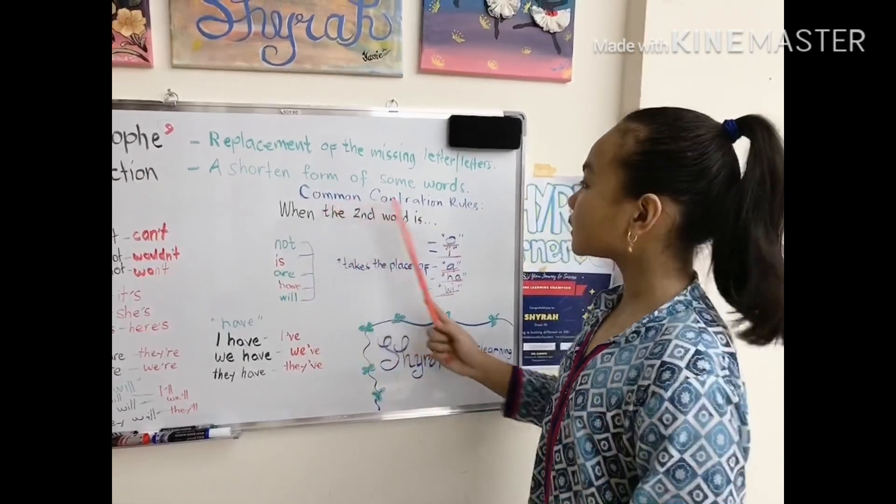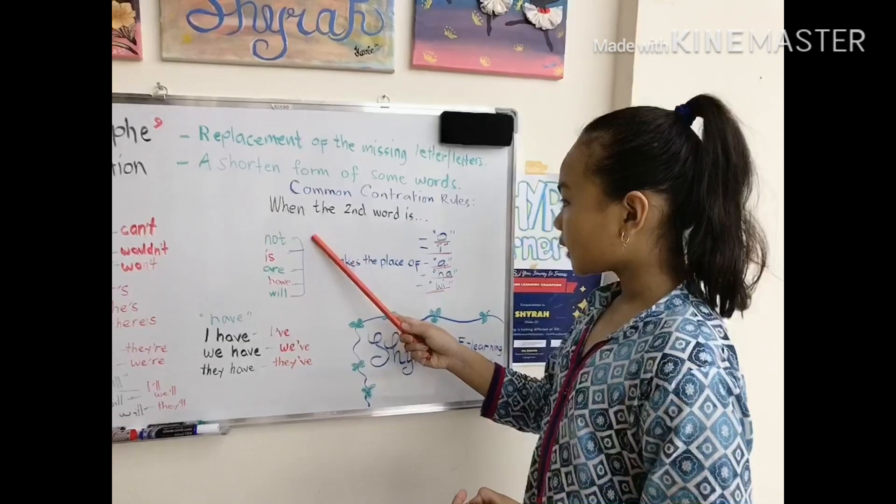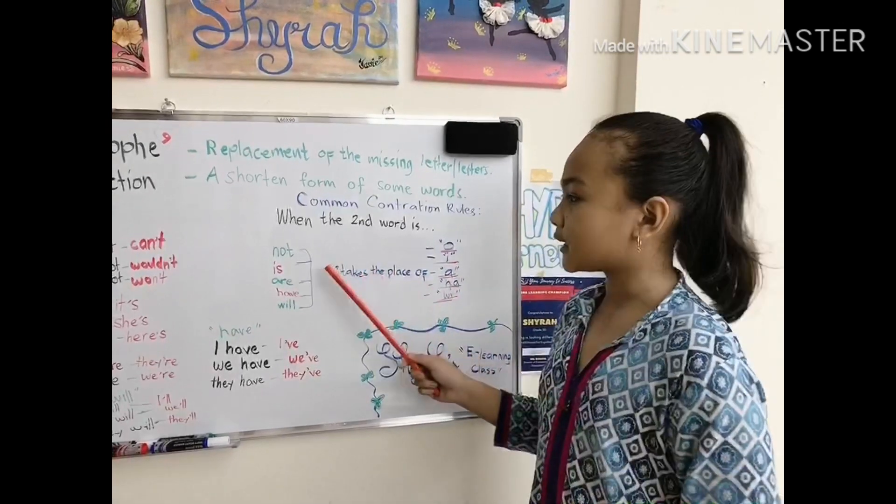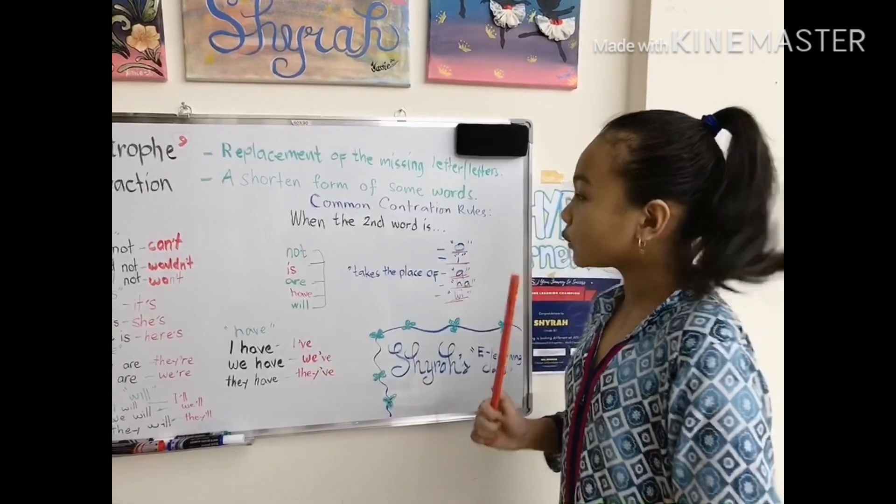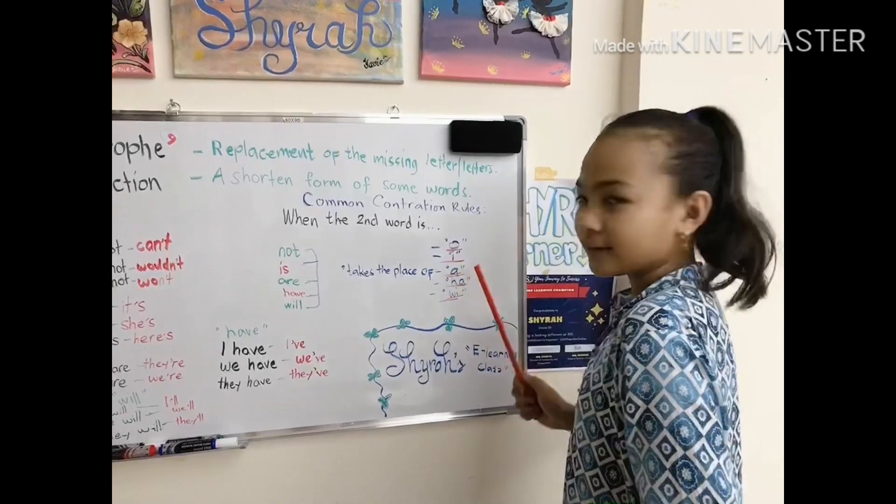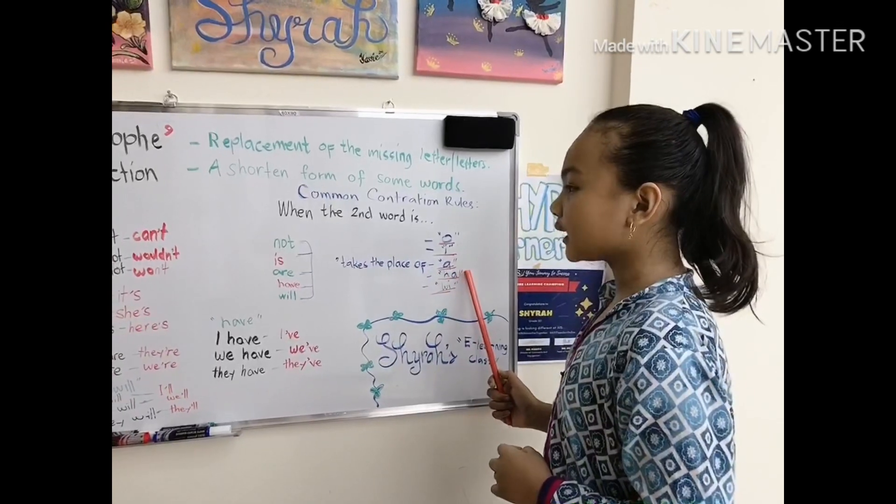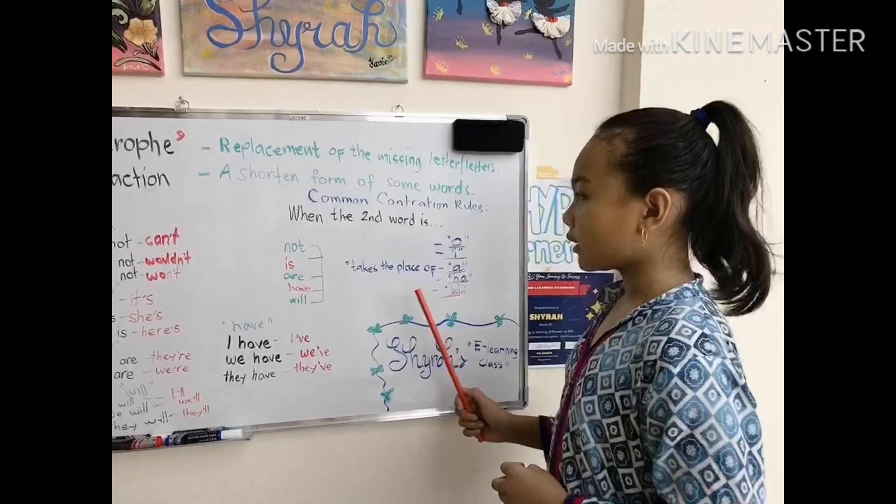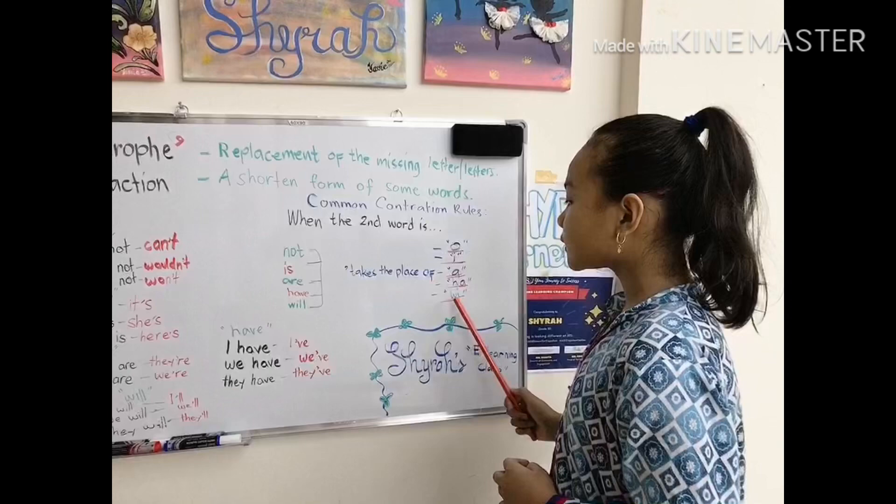And there are common contraction rules we need to remember. When the second word is not, apostrophe takes the place of the letter o. When the second word is is, the apostrophe takes the place of the letter i. When the second word is are, the apostrophe takes the place of the letter a. Apostrophe takes the place of the letters h and a when the second word is have. Same with will, the apostrophe takes the place of the letters w i.